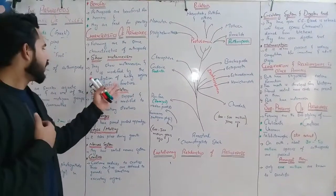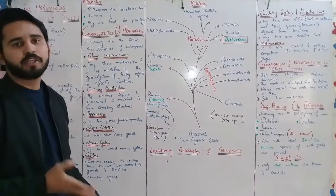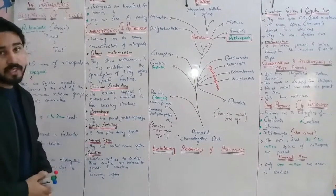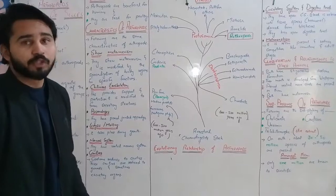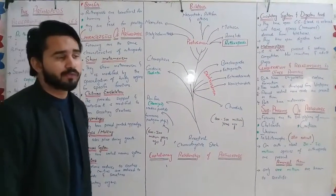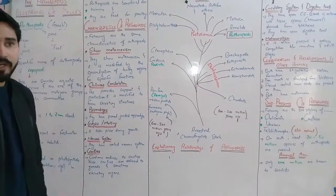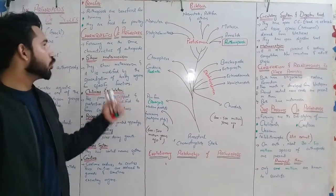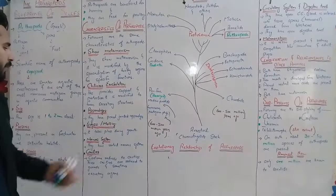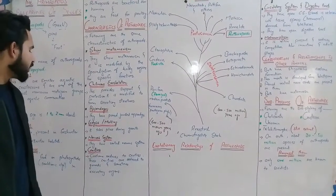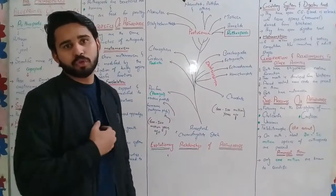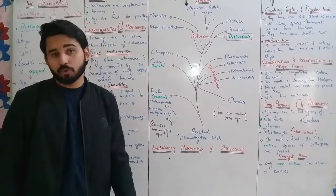Looking at the body number of parts, there can be changes in the body number of parts. We must have molting, and this molting process is important. This process is important in the growth of the body part.